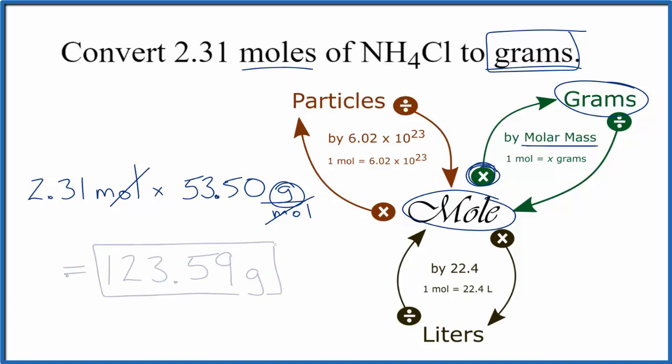We do the multiplication, we get 123.59 grams of NH4Cl, that ammonium chloride.